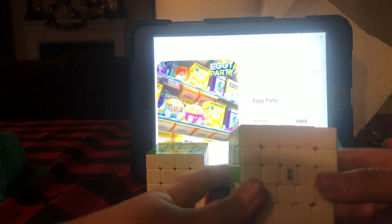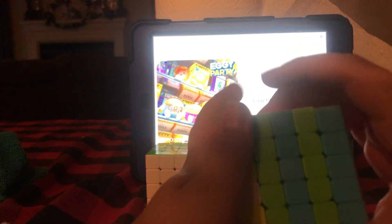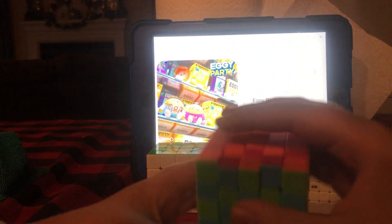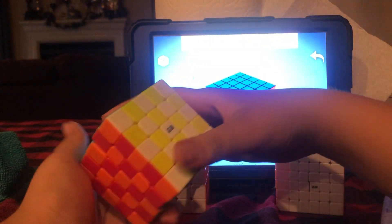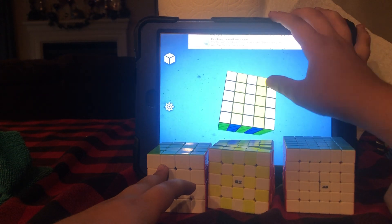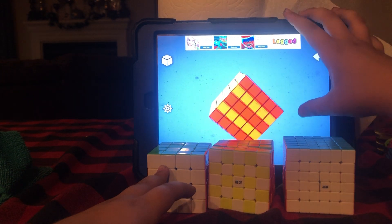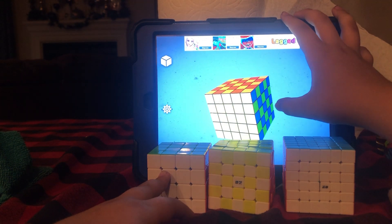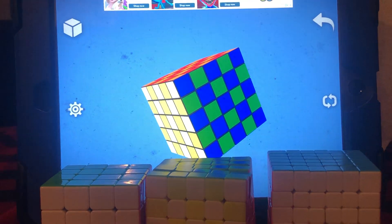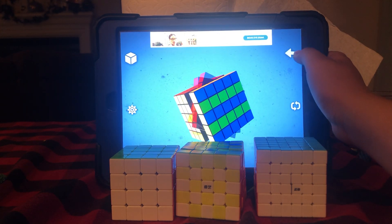Now I'm gonna do the checkerboard pattern. Now we made the checkerboard pattern on this cube. Now let's do the one online. Now we have the one on the mobile device. Let's solve it back. First I'm gonna do the one on mobile device. Now I'm gonna do it on the 5x5. It's pretty quick, simple, and easy.